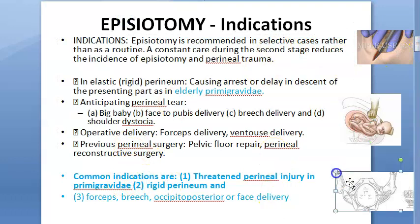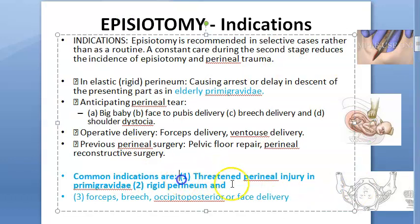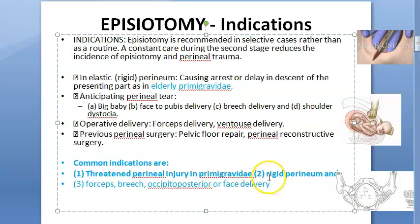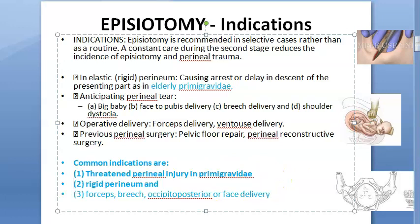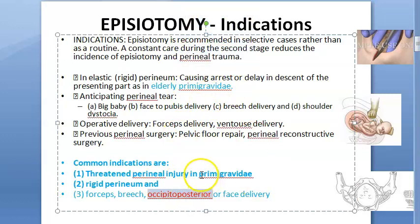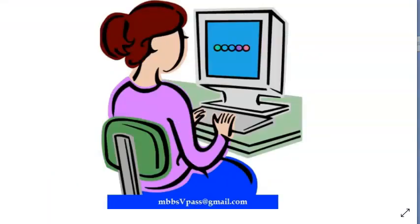What are the common indications in a hospital? Threatened perineal injury in a primigravida, rigid perineum, forceps delivery, breech delivery, occipitoposterior or face delivery. If the occiput is posterior, this is also an indication. Face delivery we have covered.